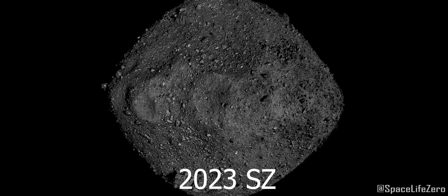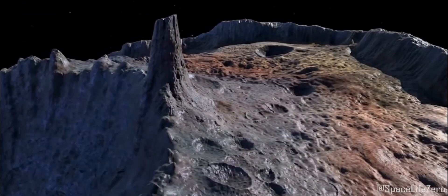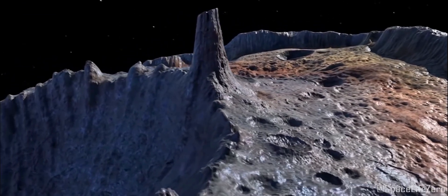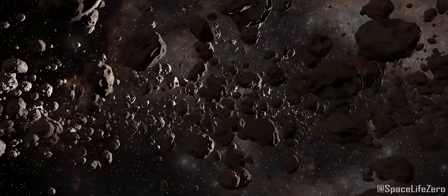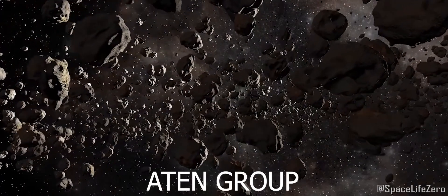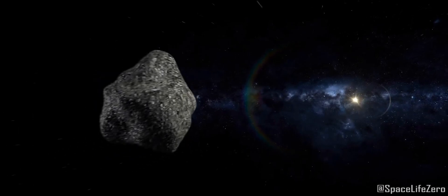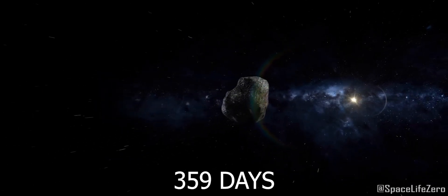Asteroid 2023-SZ: This space rock with an average estimated diameter of 24 meters belongs to the Aiden group of asteroids. It makes one orbit around the Sun in 359 days.